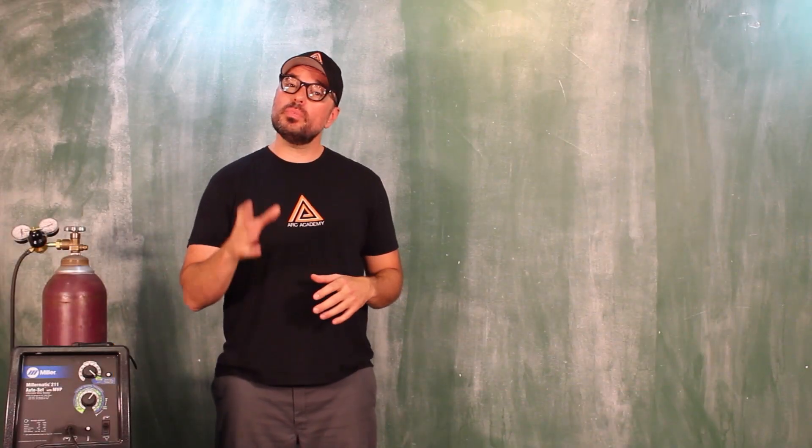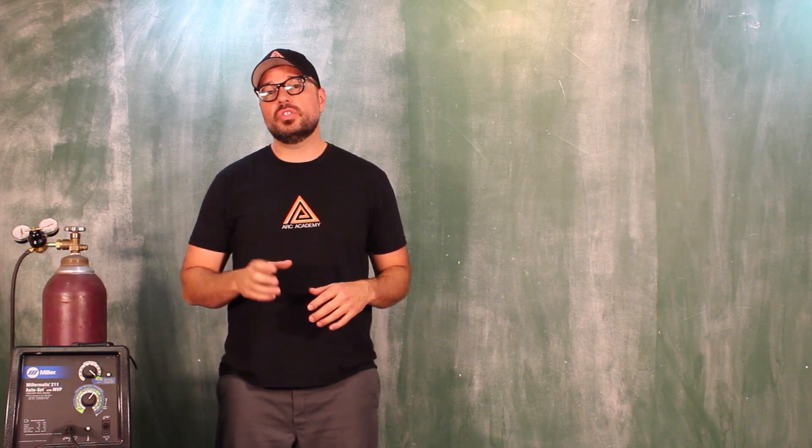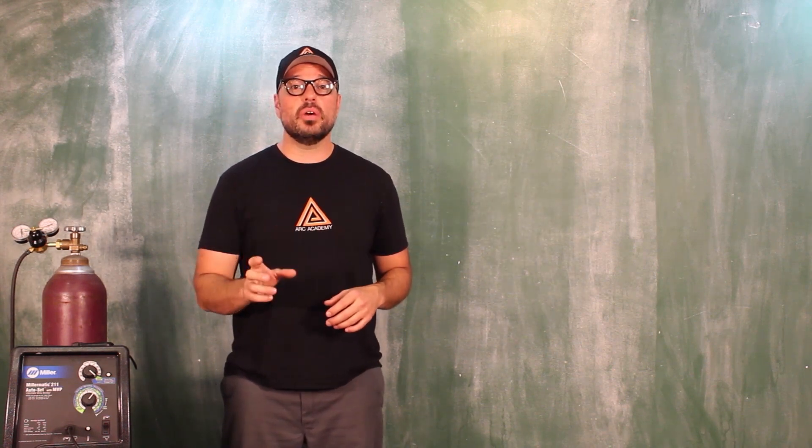After the first exercise, you should be pretty proficient about carrying that puddle through the weld zone, keeping it the same size so you get those two nice, even parallel edges.